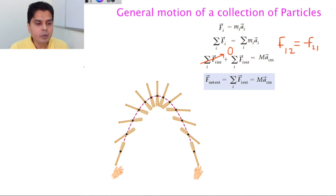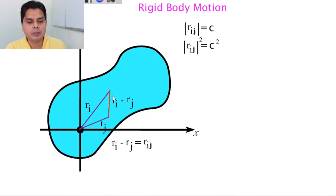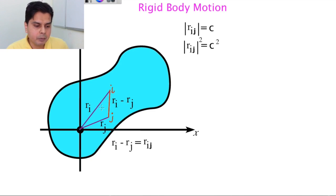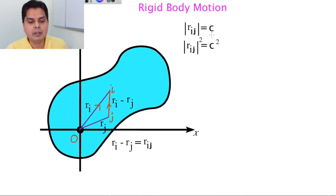To overcome these two limitations, we focus on a very important particular case: a rigid body. A rigid body is defined as any body such that the distance between any two particles i and j is constant. If R_i is the position vector of the i-th particle and R_j is the position vector of the j-th particle, then R_ij = R_i - R_j, and the definition of a rigid body is that the modulus of R_ij is constant.